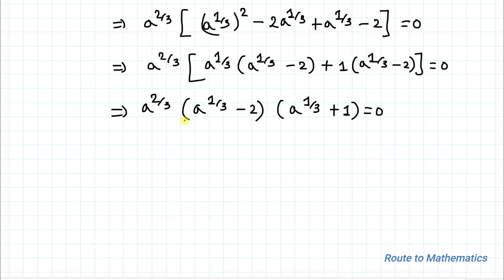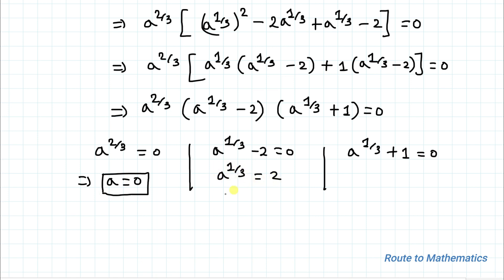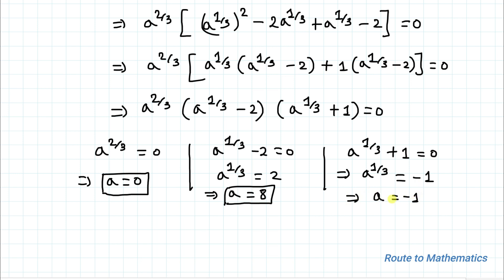From this factored form we get three solutions. First: a^(2/3) = 0, which gives a = 0. Second: a^(1/3) − 2 = 0, so a^(1/3) = 2, and cubing both sides gives a = 8. Third: a^(1/3) + 1 = 0, so a^(1/3) = −1, and cubing both sides gives a = −1. So the candidates are a = 0, a = 8, or a = −1.